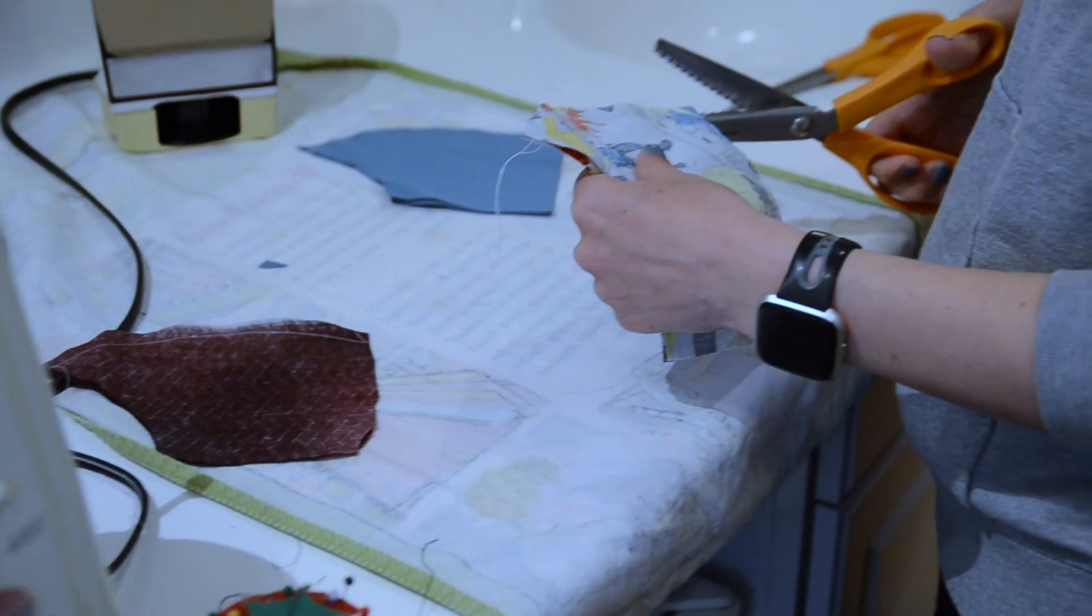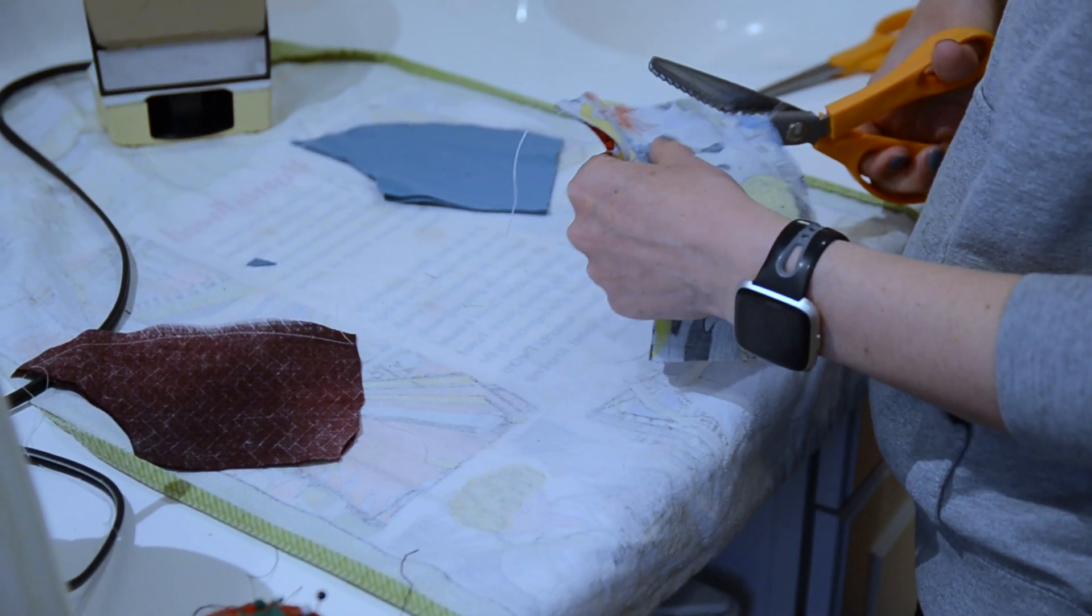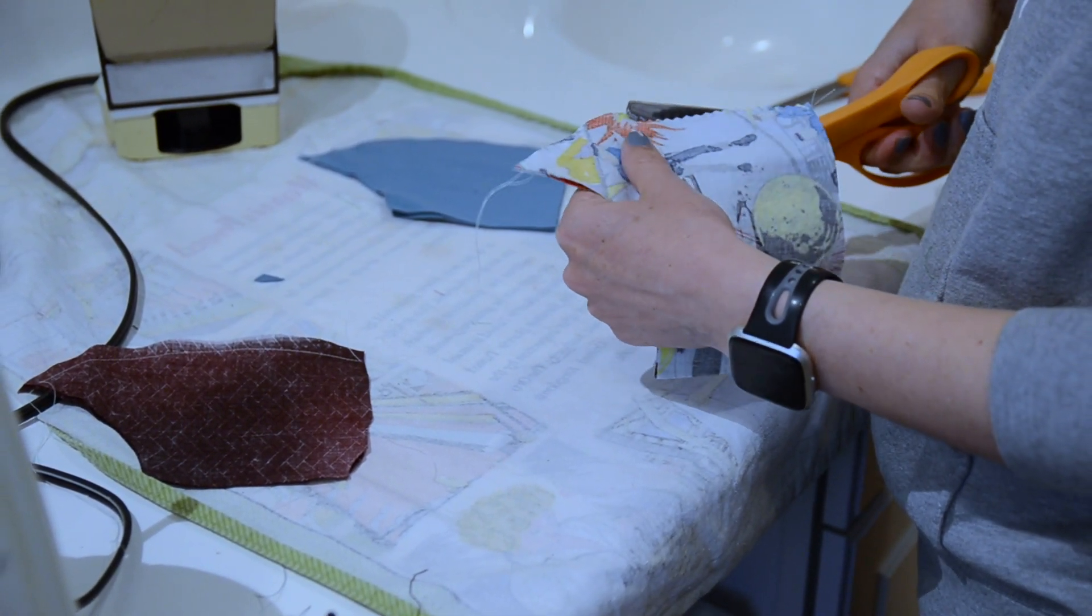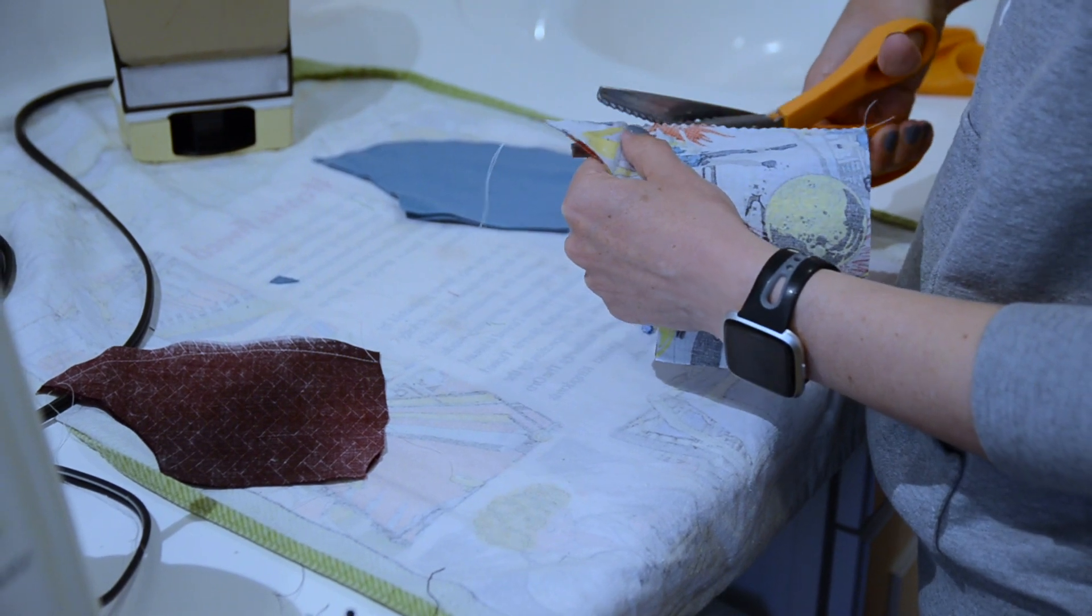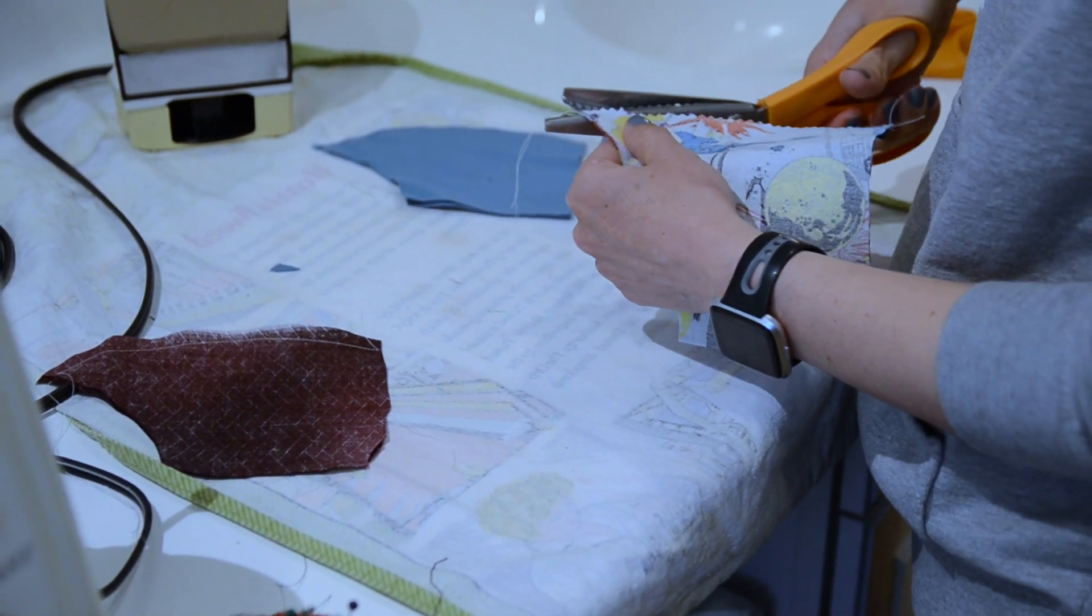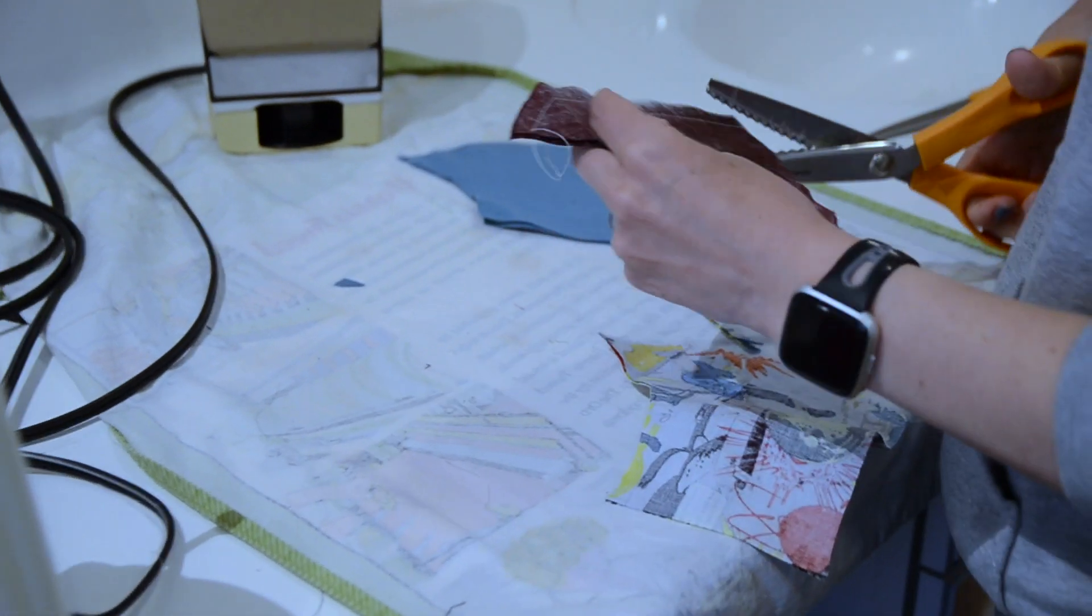The next step to reduce bulk in the seam is we're going to trim each of these right up to where you just sewed. I'm using pinking shears, but if you don't have these, regular scissors will absolutely work.